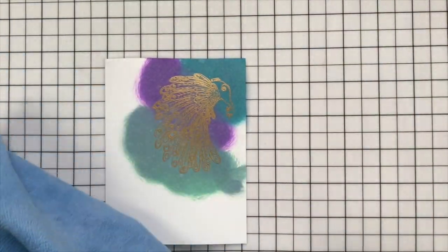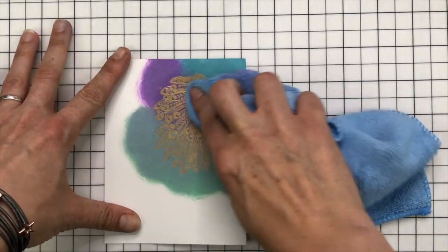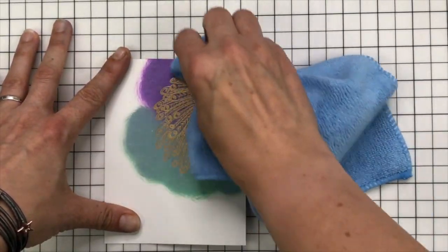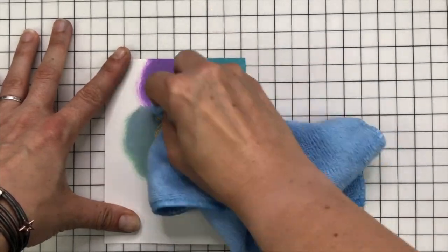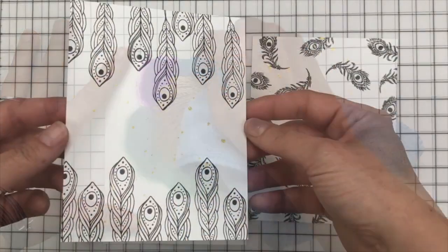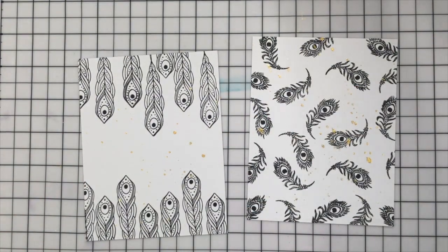And you will see that what's left behind and give it a little bit of a buff is a gorgeous gold embossed peacock, and some subtle purple and blue and green colored ink trapped in between that embossing powder.